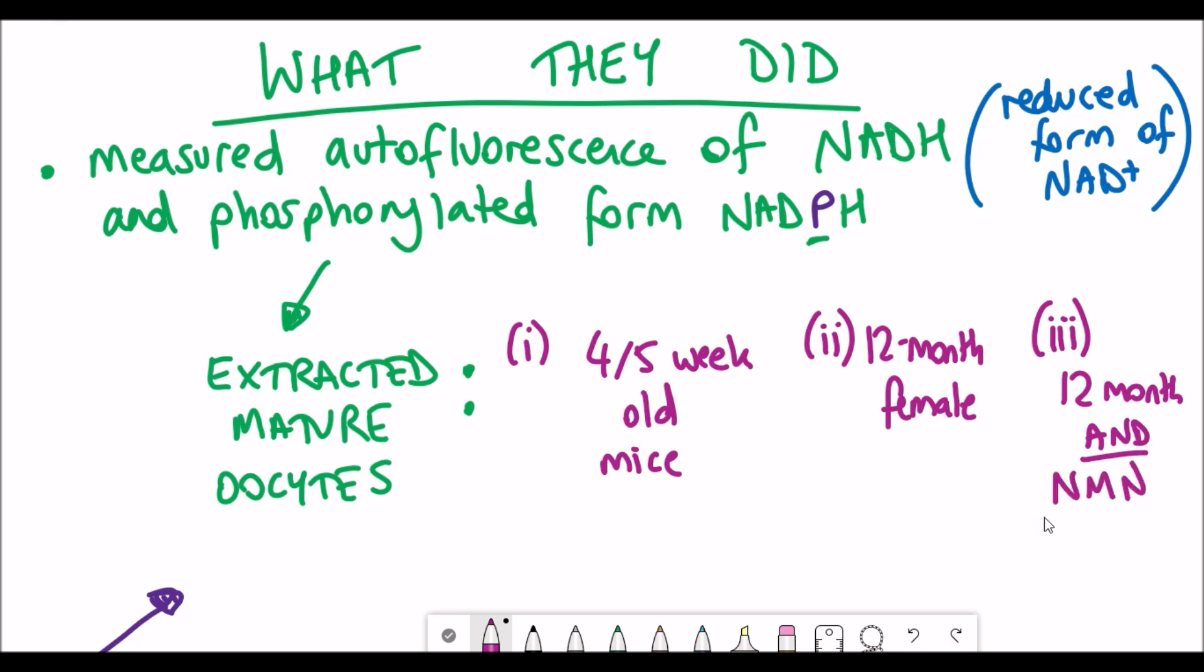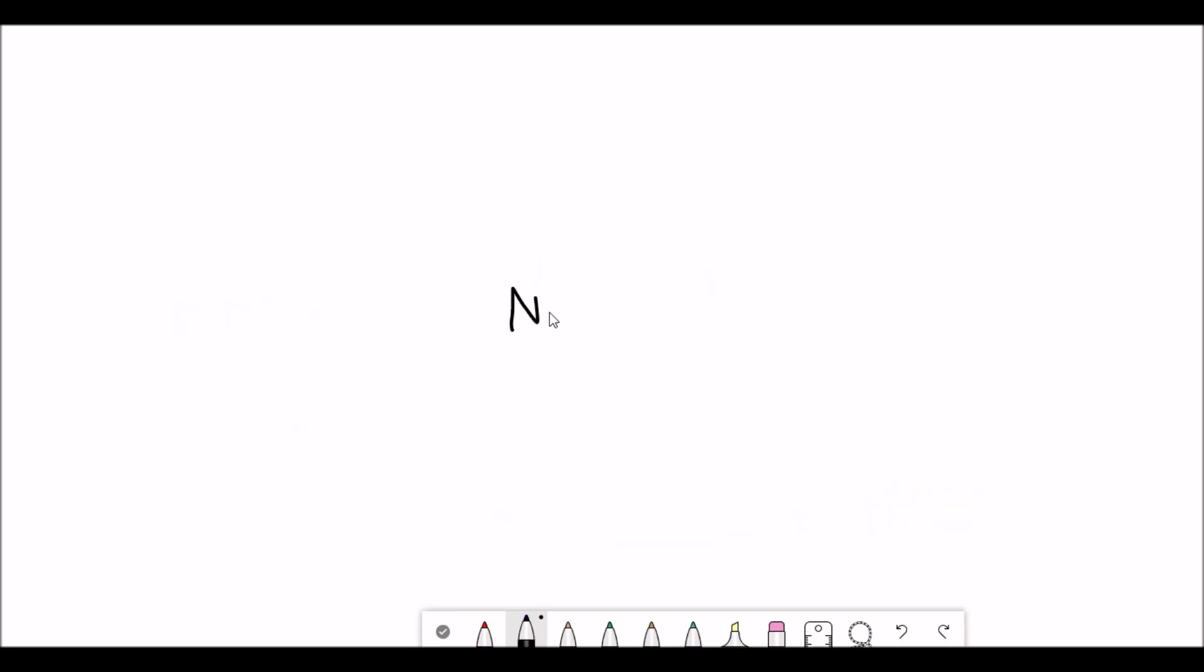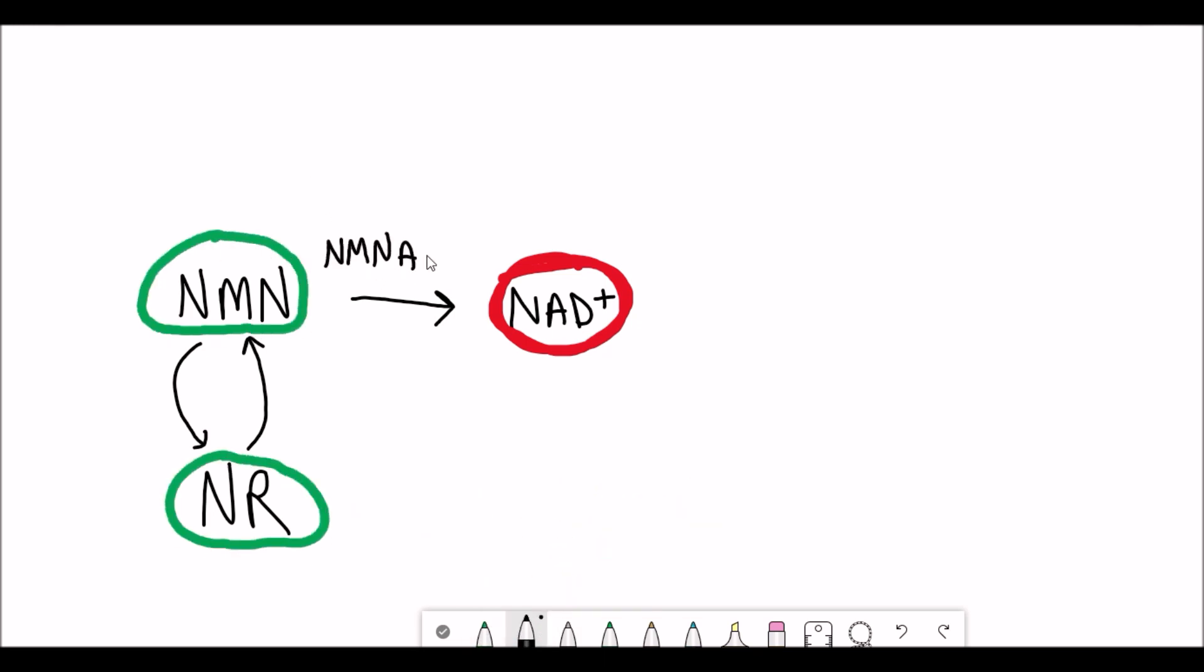As I mentioned, NAD+ is a redox coenzyme involved in energy and metabolism, and oocytes, fertilization, and fertility are energetically demanding processes with a lot of rapid growth. So they measured the levels of NADH, which is the reduced form of NAD+, and NADPH, the phosphorylated form of NAD+.